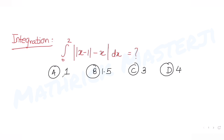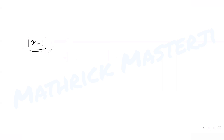We need to figure out which one of the answer choices is the correct answer. To find the value of the integral, I'll use the concept of absolute values. Looking inside the mod, we have the expression x minus 1. Let's call this inner function g(x). To understand when it becomes positive and when negative, I'll equate x minus 1 with 0, which gives x equals 1.